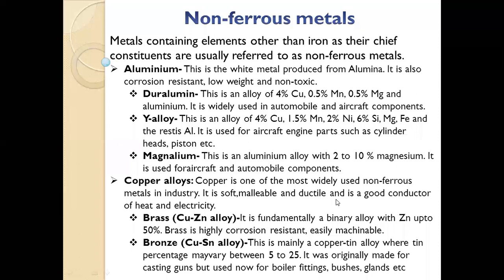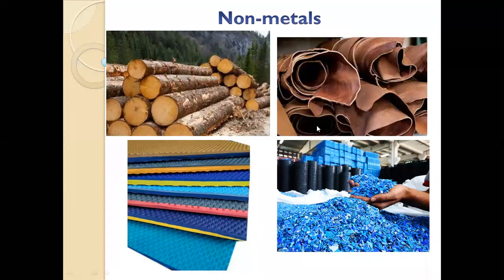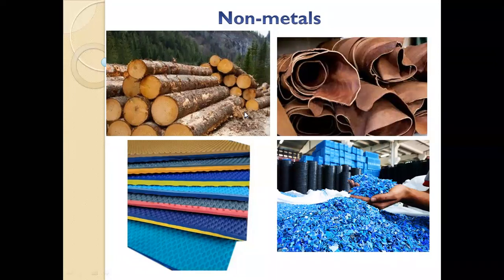Non-metallic materials include timber, leather, plastics, and rubber — both synthetic and natural. Timber is used in vehicles for antique looks or in home furniture. Leather is used for seat covers, jackets, and car interiors. Rubber is used for tires, yoga mats, shock absorbers, and dusters due to its high bulk modulus and vibration-absorbing properties.